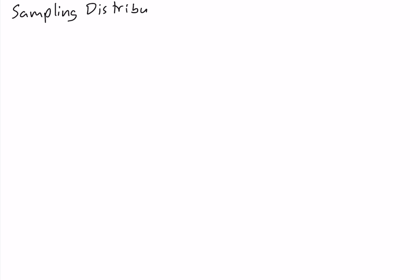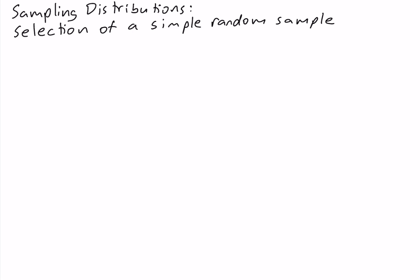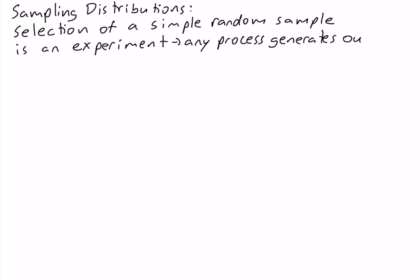Sampling distributions. The idea behind sampling distributions is that the selection of a simple random sample can be thought of as an experiment. An experiment in probability is different than an experiment in the sciences — an experiment in probability is any process that generates some outcomes. So the selection of a simple random sample is a process that generates outcomes, which are the elements we choose for our sample.